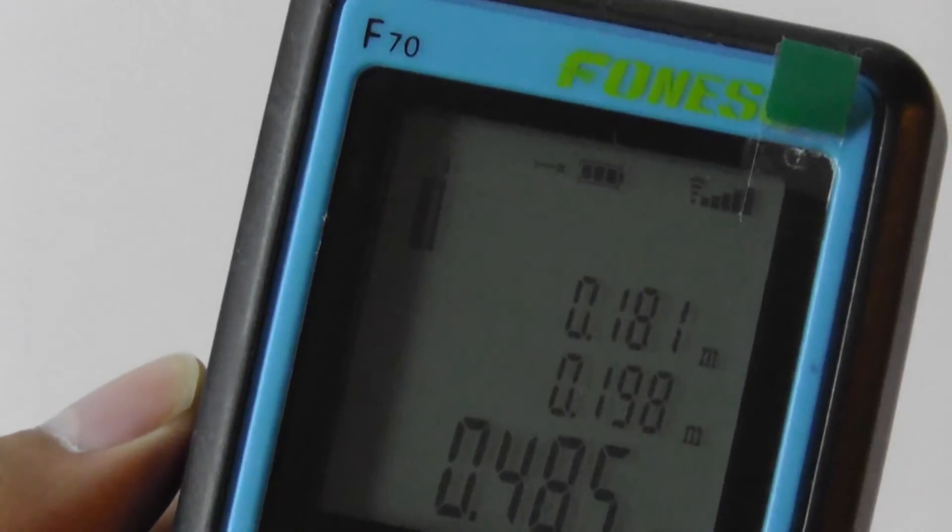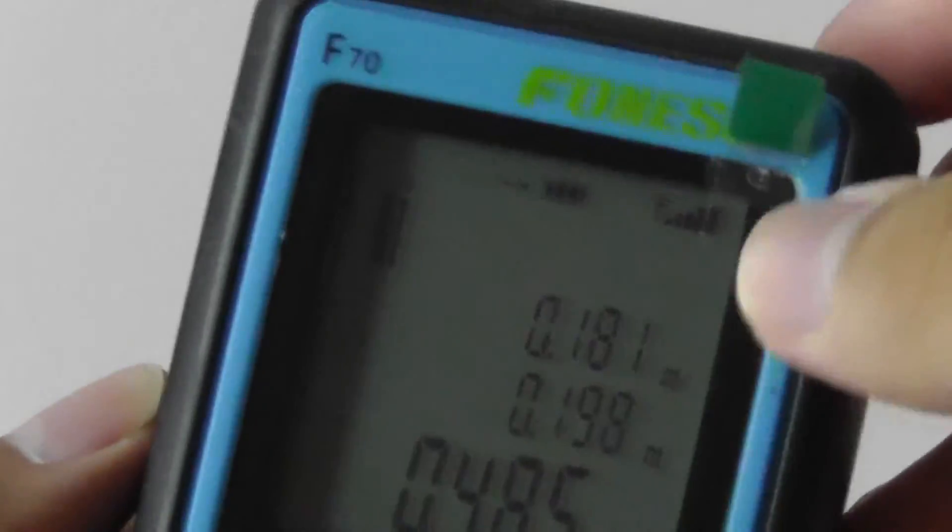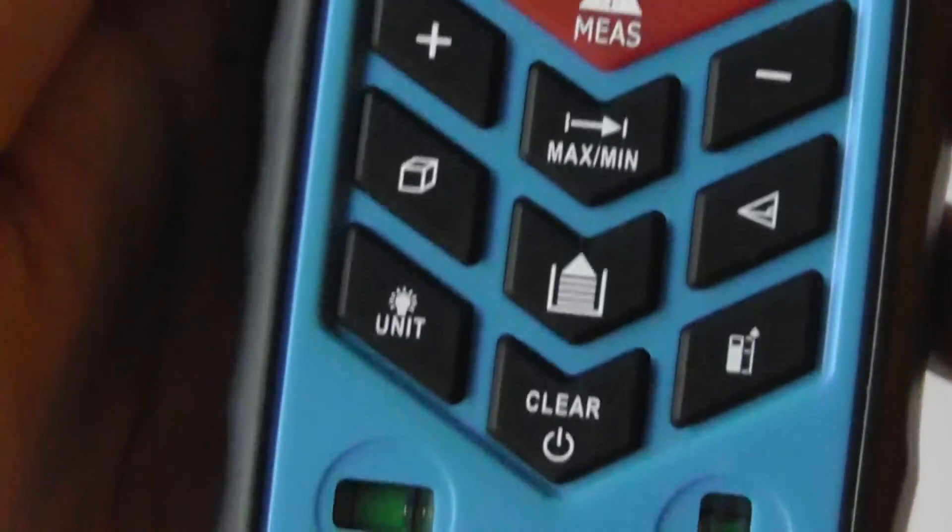On the very top you have access to the battery status. There's also again that precision bar which shows you the accuracy and finally these are the previous measurements. To clear them up I can tap on the bottom key there a few times and that basically clears everything.